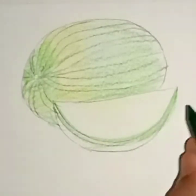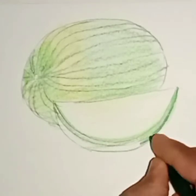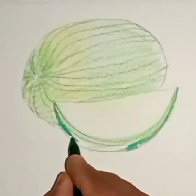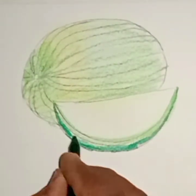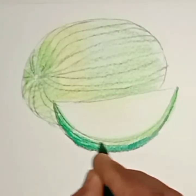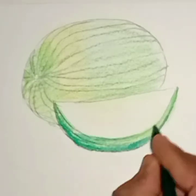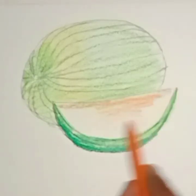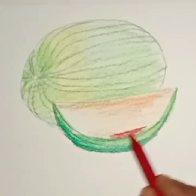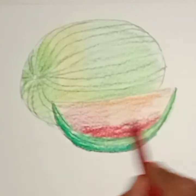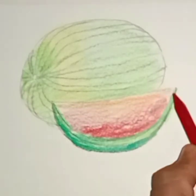And here we will use dark green color. Like this. Now we will use orange color, apply it lightly. And now on the bottom side area we will apply red color first. Like this. And when you go upward, make this color lighter.